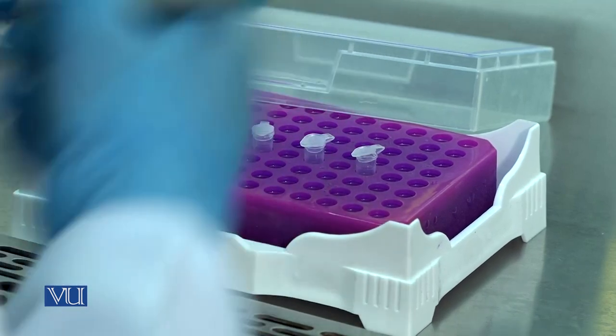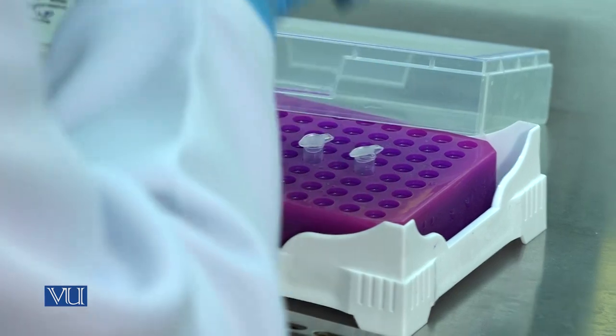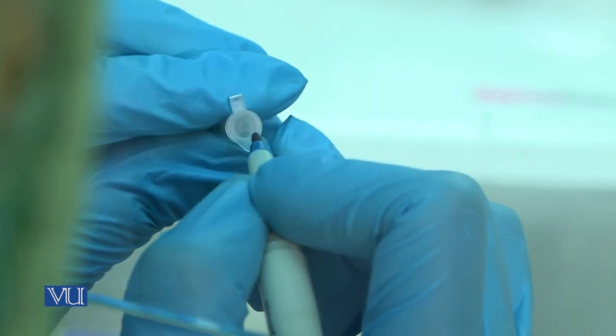This experiment is performed in two steps. For the first step, place the PCR tubes into the cooling rack. Label the PCR tubes accordingly.